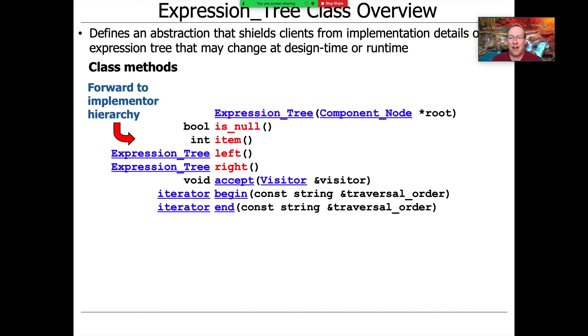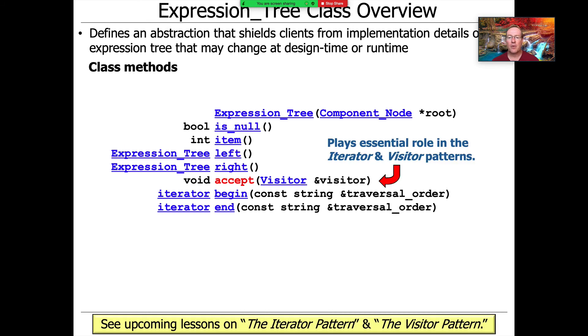We then have a way to forward the methods called by the client on to the appropriate composite methods. That's these four methods here: isNull, item, left, and right. You'll notice that they completely abstract away from the details of what the component hierarchy looks like, the component node hierarchy from the composite pattern.